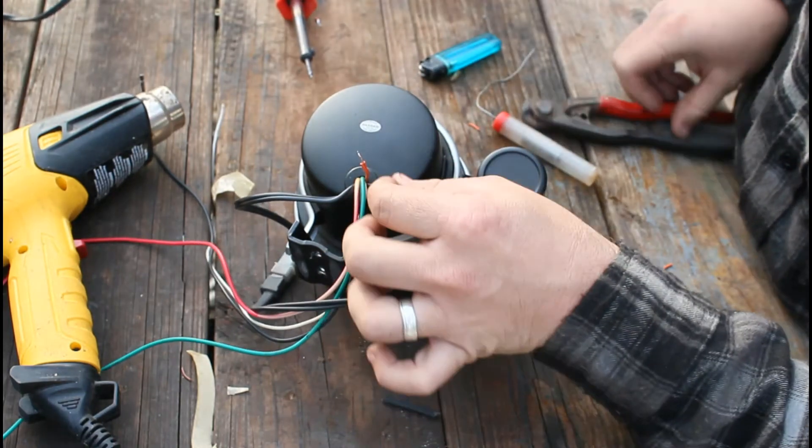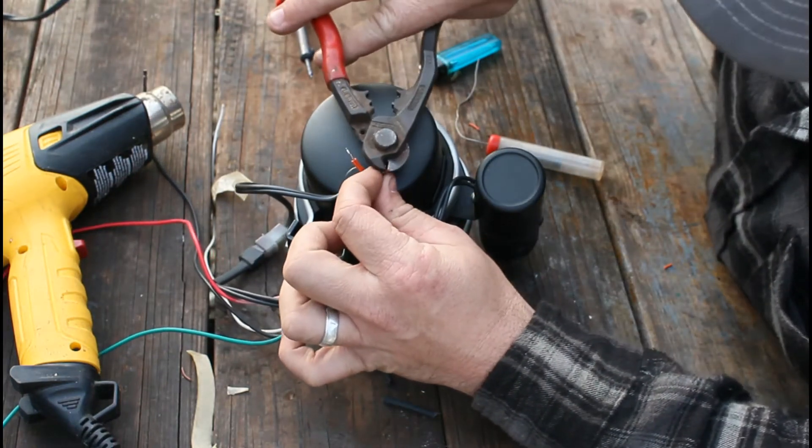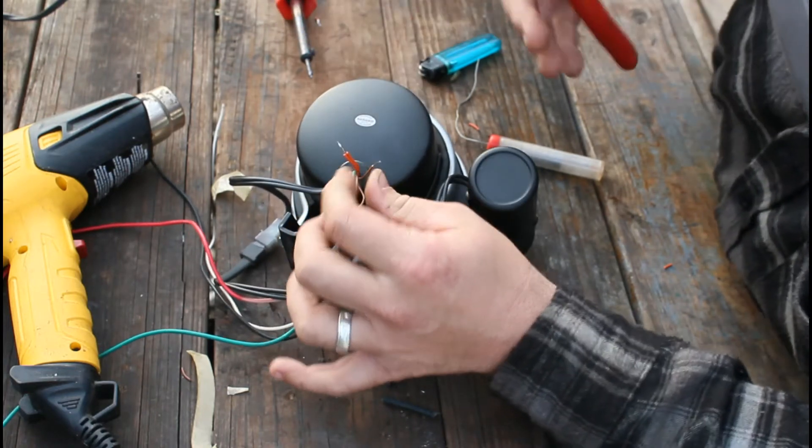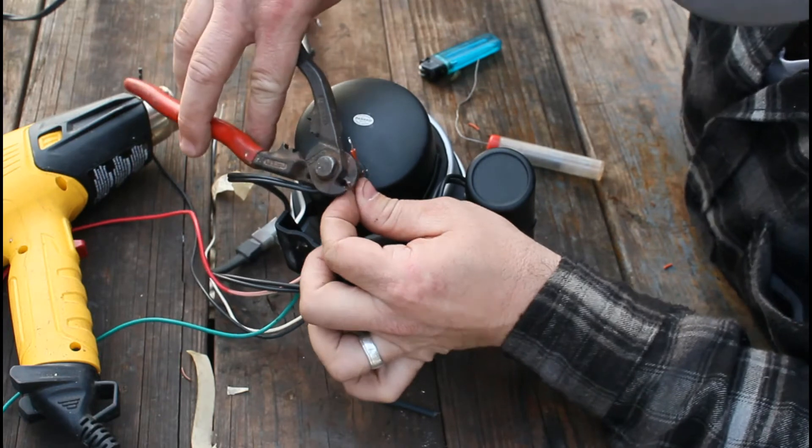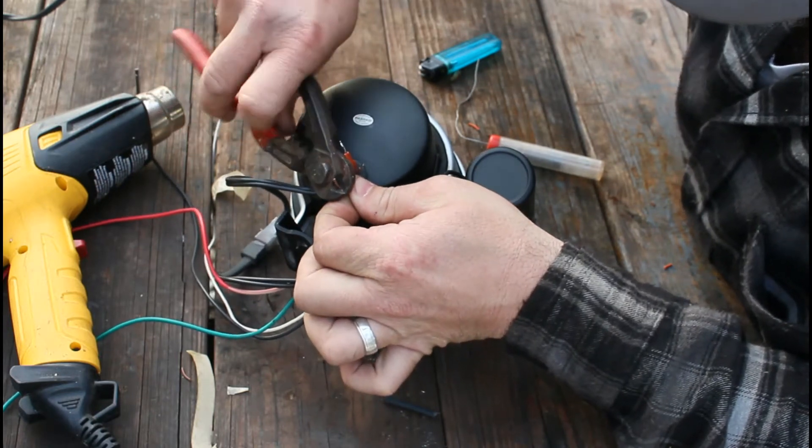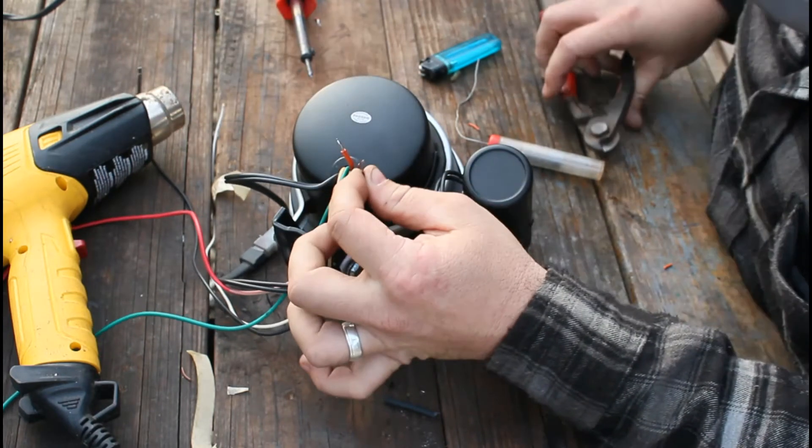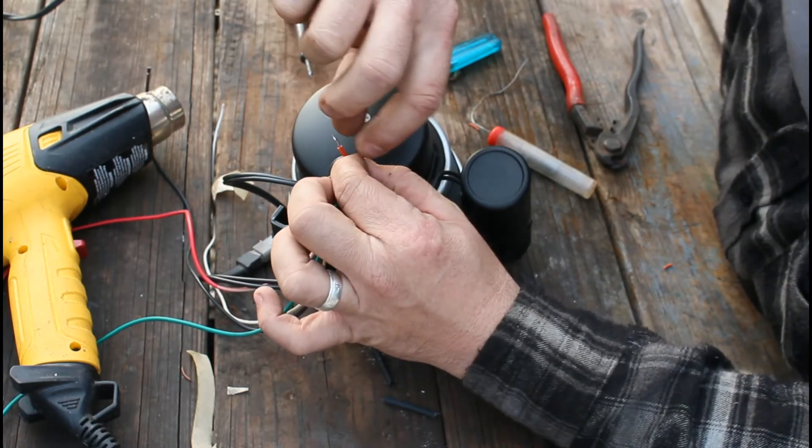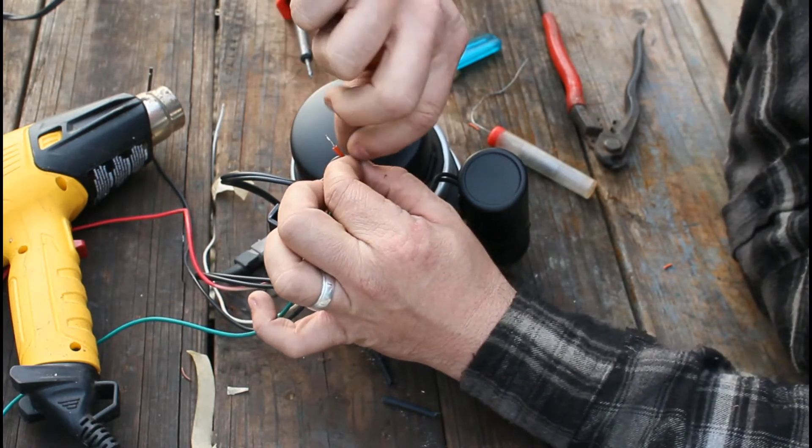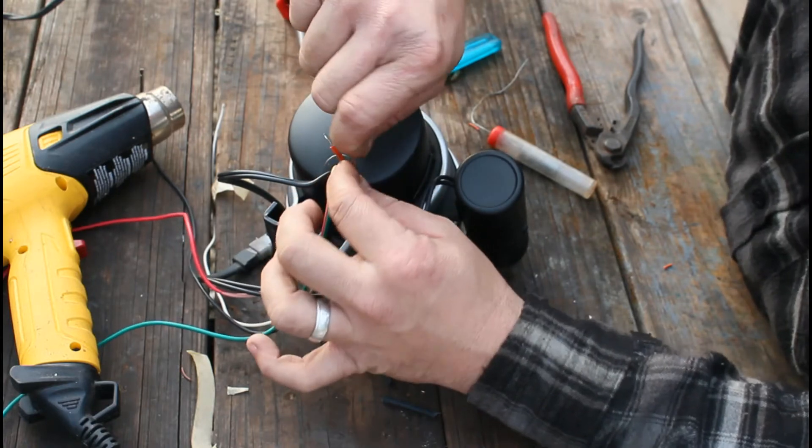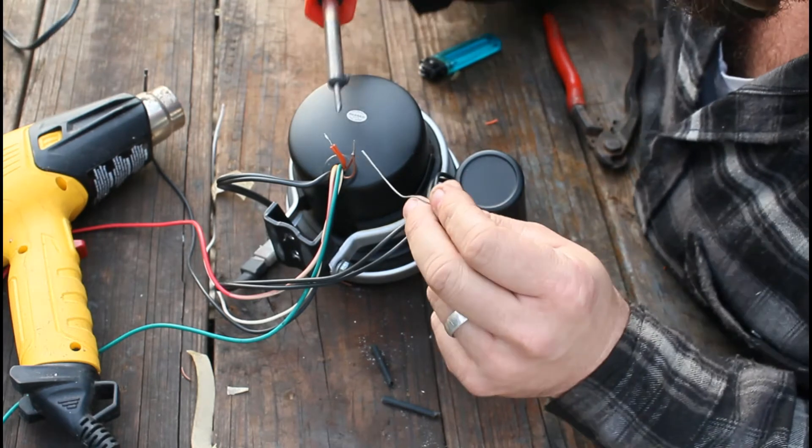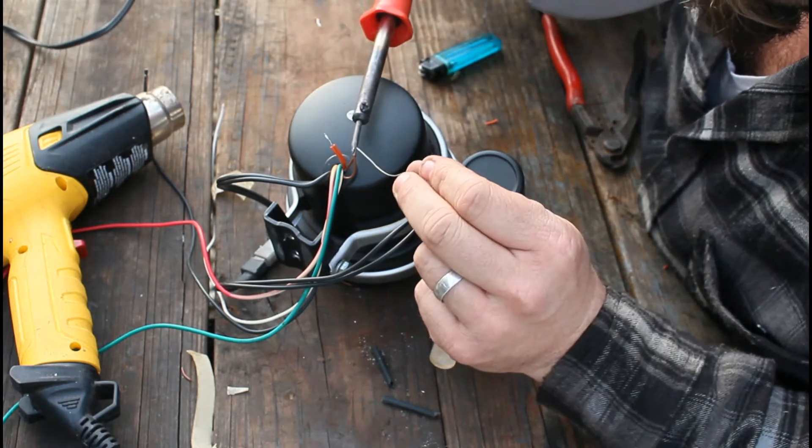We'll do the other wires the same way. Strip them, twist them, and solder them.